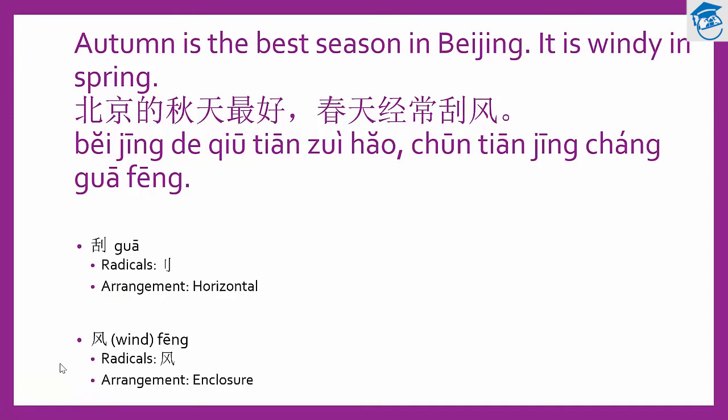So Mary says 北京的秋天最好, meaning Beijing's autumn is the best — in other words, autumn is the best season in Beijing. And 春天经常刮风 means spring always blows wind. 刮风 means the wind is blowing — 刮 describes the motion of blowing wind. So 春天经常刮风 means it is very windy in spring.